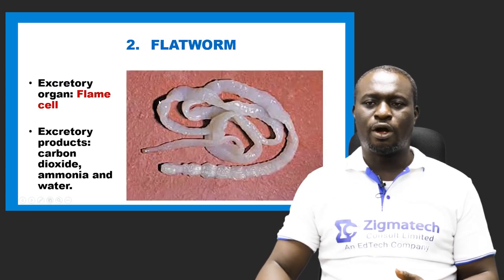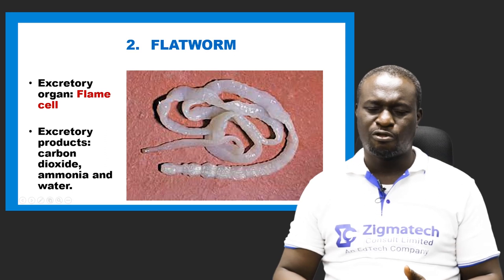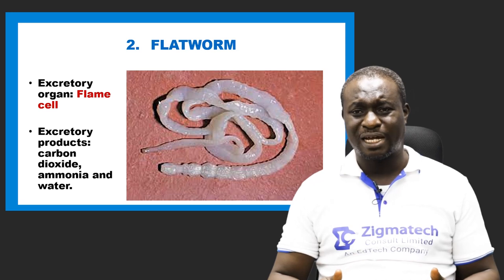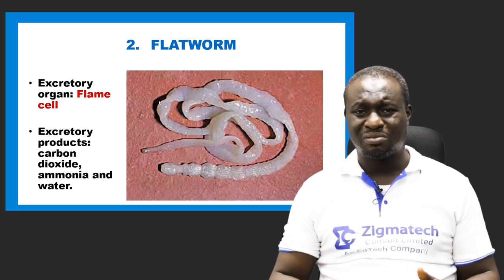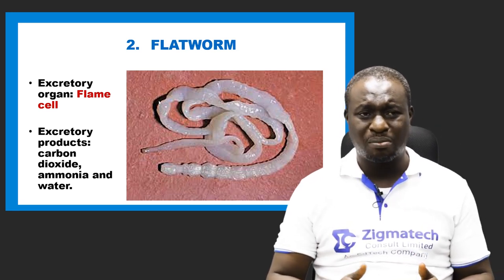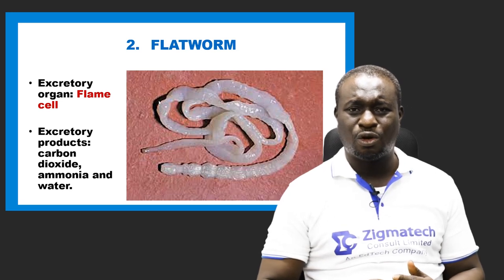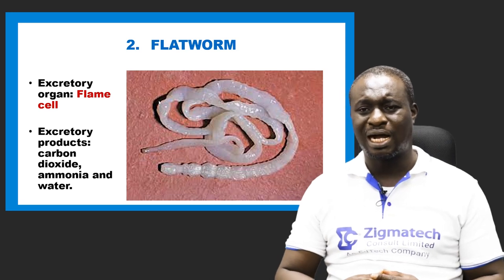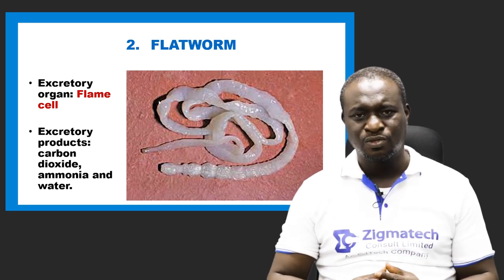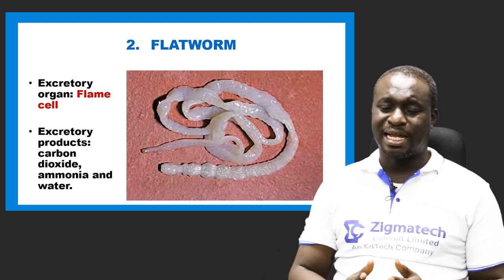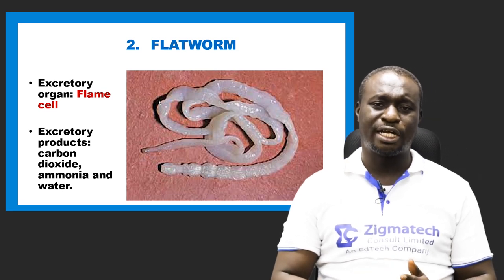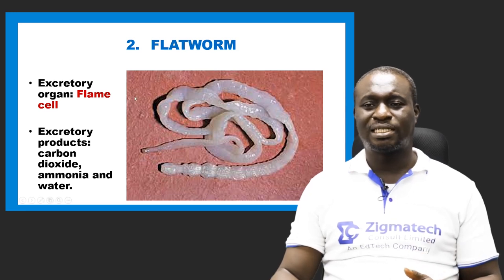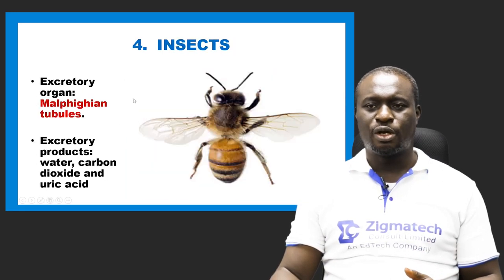Flatworms belong to the phylum Platyhelminthes. There are different types, including planaria and tapeworm. The excretory organs of flatworms are called flame cells. Their excretory products include carbon dioxide, ammonia, and water.